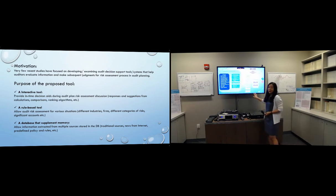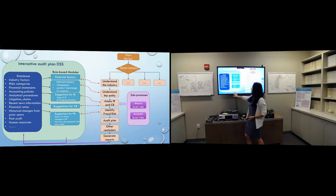This is a preliminary structure for the proposed decision support system. The left side is the system. It has two parts. The left one is the databases which will include all the information sources such as the financial statement, accounting policies, the past audit, historical changes, etc.